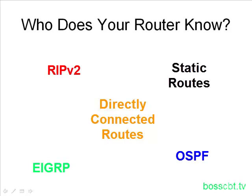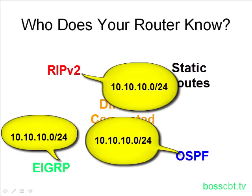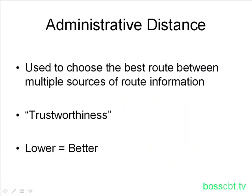The router needs a way to determine the best route from all these competing sources. Let's say three routing protocols — RIP, OSPF, and EIGRP — are each telling your router about a particular network. Which one is the router going to use? We know about the metric idea, like hop count for RIP, but OSPF doesn't use hop count — its metric is cost. You can't compare OSPF's cost to RIP's hop count. This brings us to administrative distance, which is going to solve the problem. Administrative distance is used to choose the best route between multiple sources of routing information.